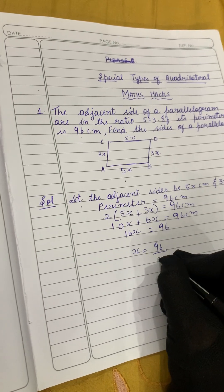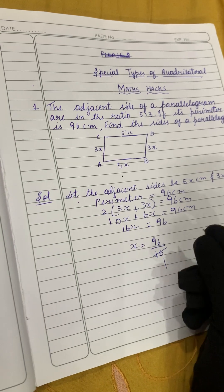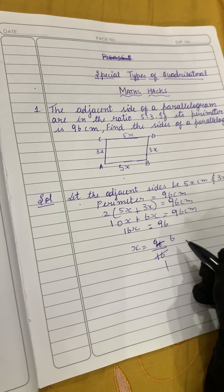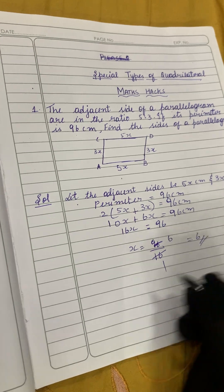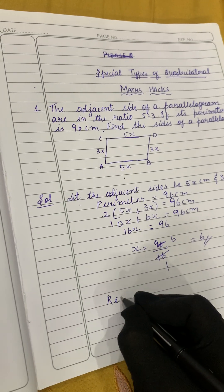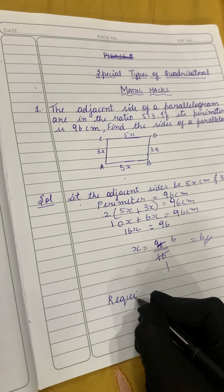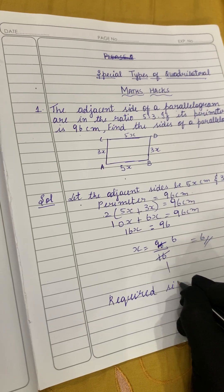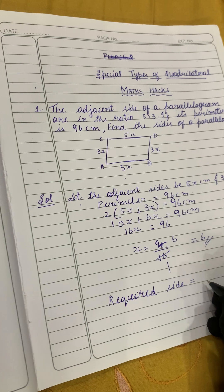X is equal, so let's bring this 96 here and 16 in the denominator. 16 ones are 16 and 16 sixes are 96, so our x equals 6.